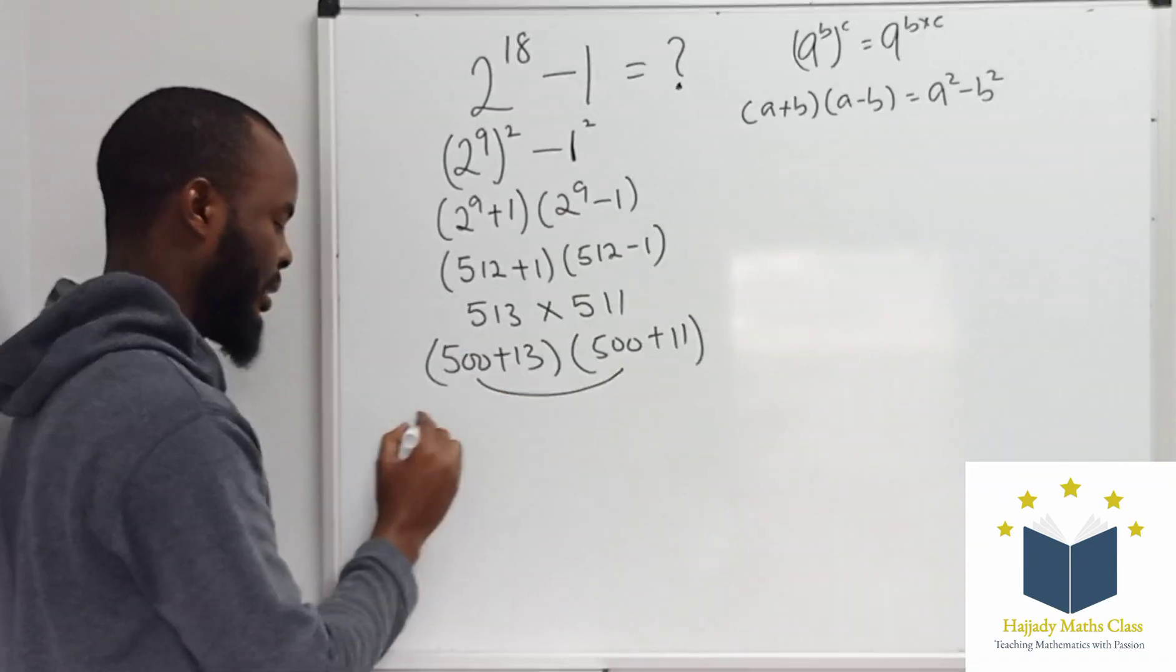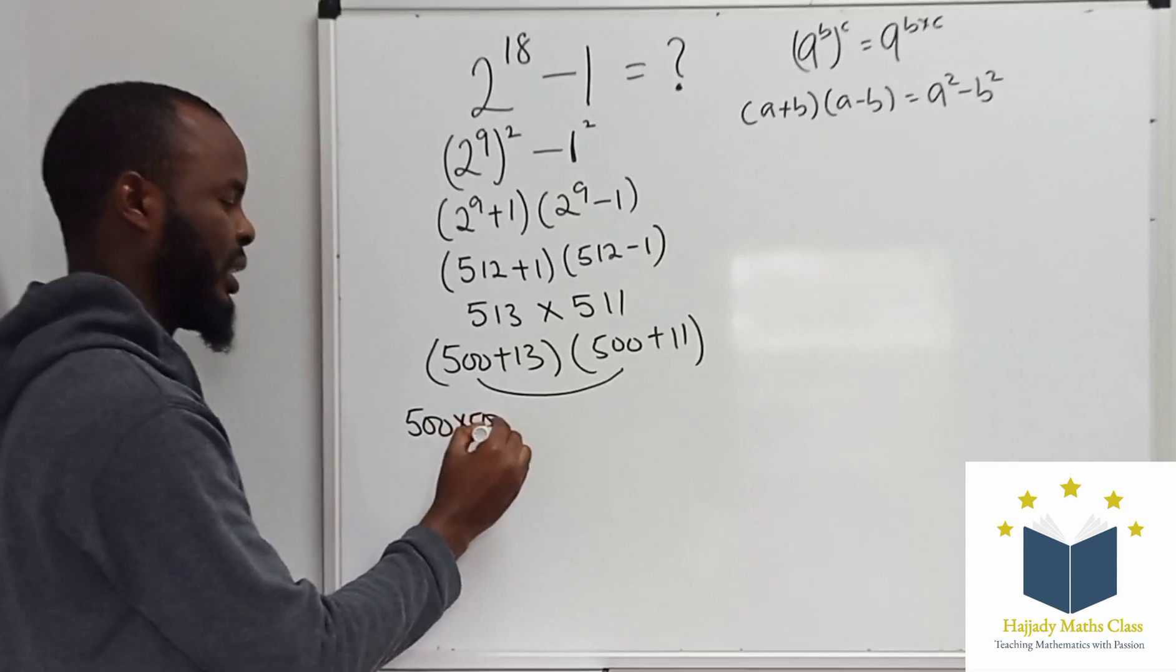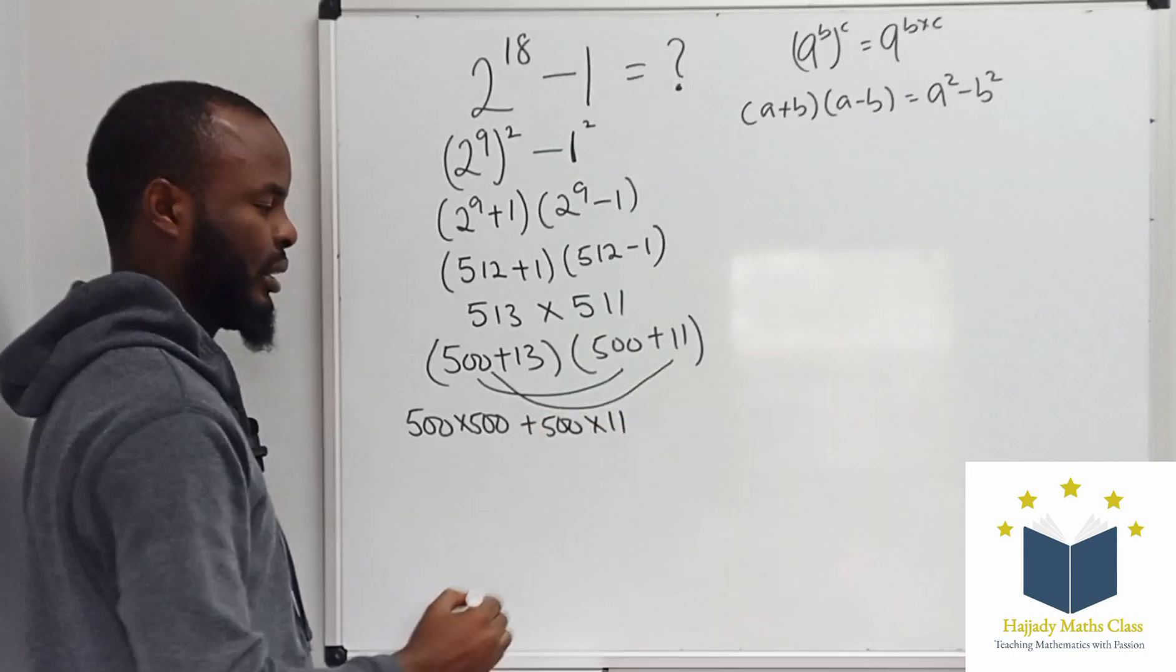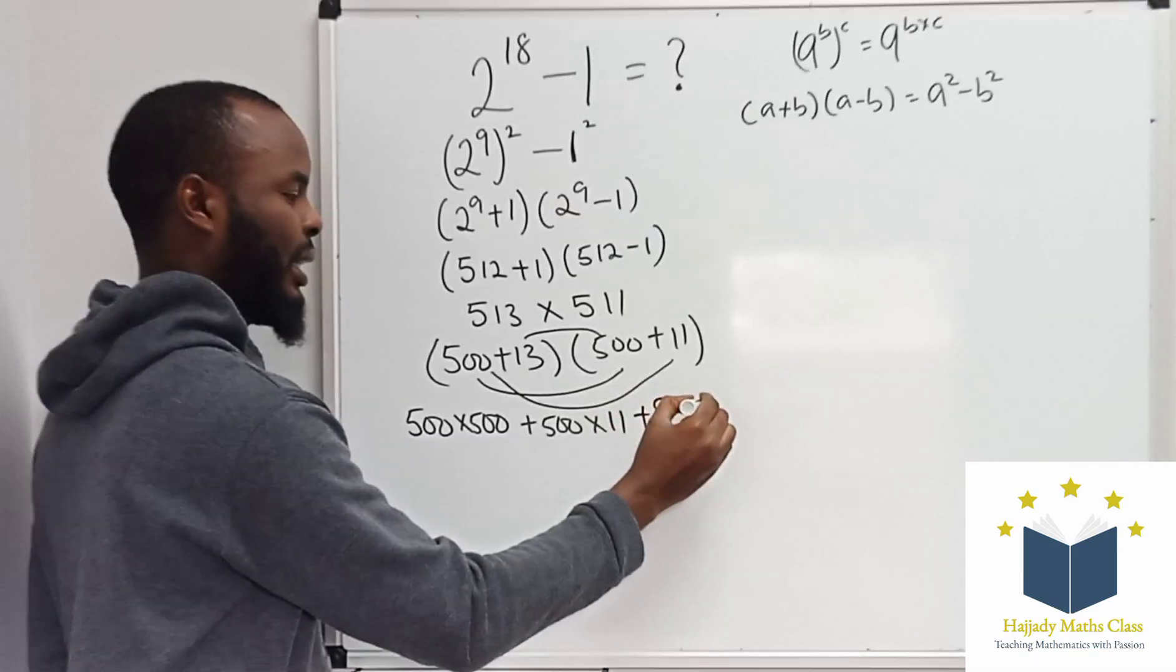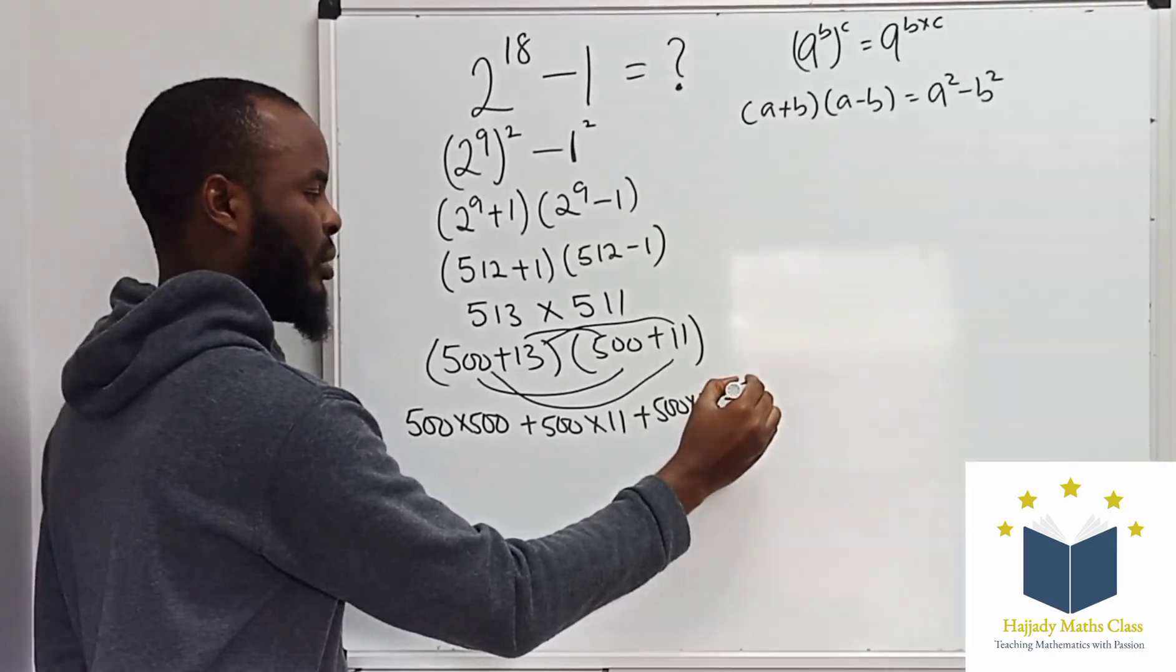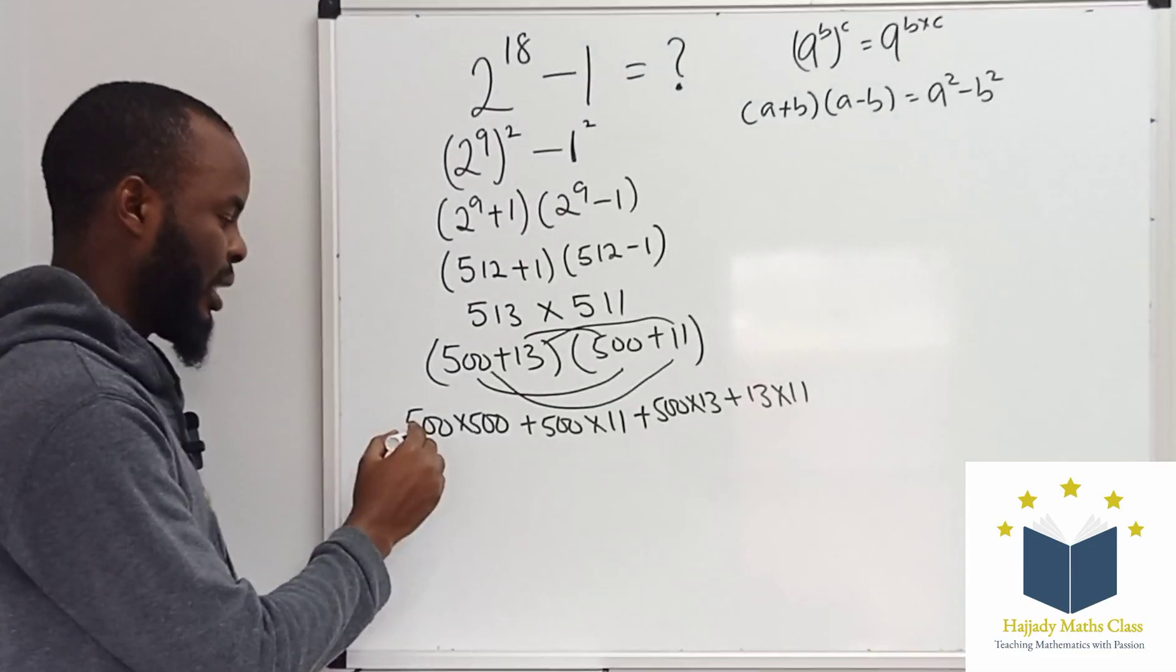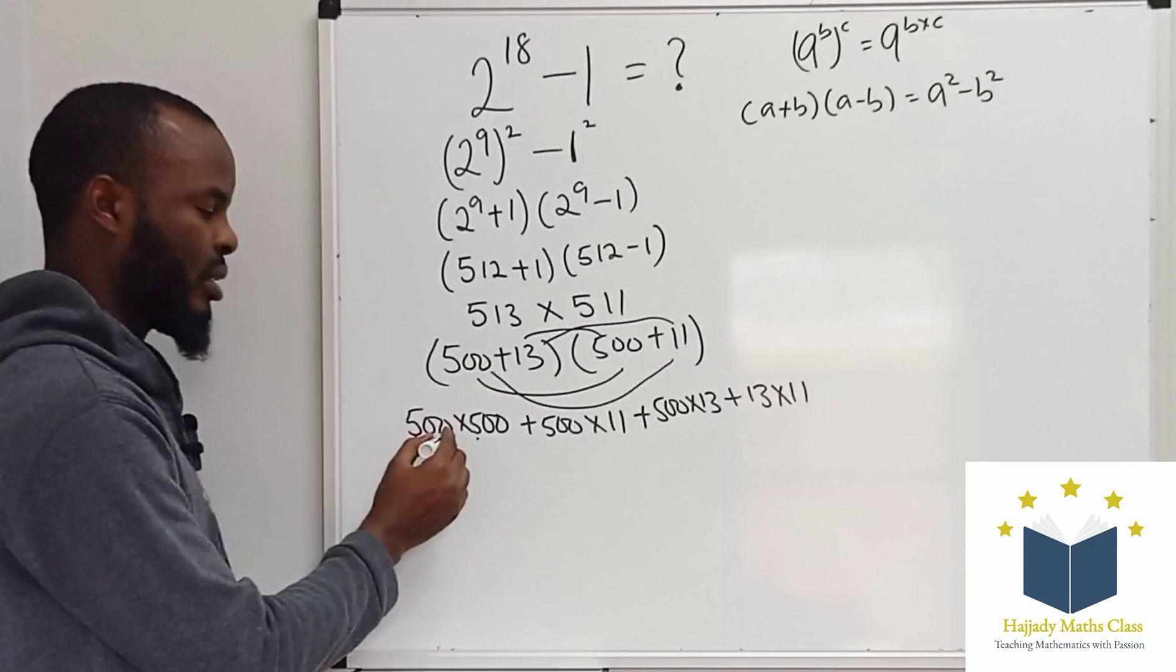Multiplying this out gives 500 multiplied by 500, plus 500 multiplied by 11, plus 500 multiplied by 13, plus 13 times 11. 500 multiplied by 500 is just like 5 times 5, which gives 25, and we have 4 zeros left.